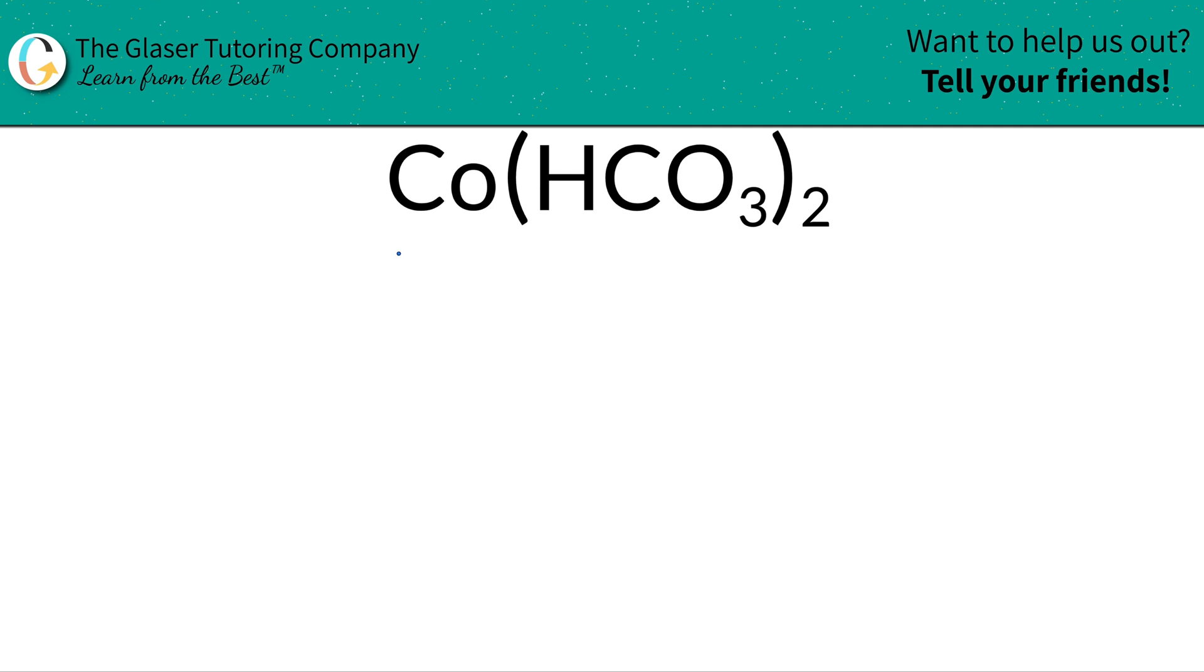So how do we find the percent composition of each element here inside of cobalt to hydrogen carbonate? Well, the first step is to find the mass of this particular compound, and I'm going to use this table to help us out.